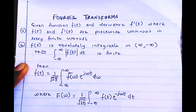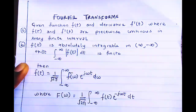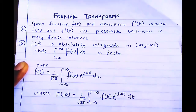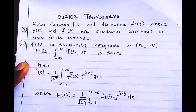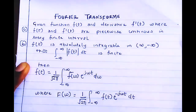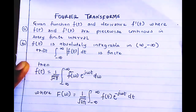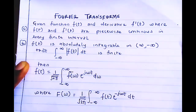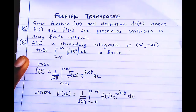Now look at this theory. Given a function f(t) and its derivative f'(t), where f(t) and f'(t) are piecewise continuous in every finite interval. Piecewise continuous means that in a finite interval — for example, between one and three — if the function is continuous in that interval, it is called piecewise continuous. A function can also be continuous over infinite intervals.